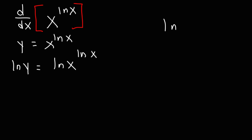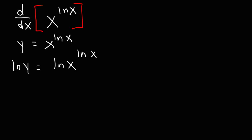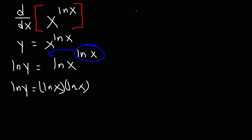For instance, the natural log of a to the second power — we can move the two to the front — so it's equal to 2 ln a. So therefore, we could take this natural log and move it to the front. And so we're going to have the natural log of y is equal to ln x times ln x, or we can write that as ln y is equal to (ln x)².